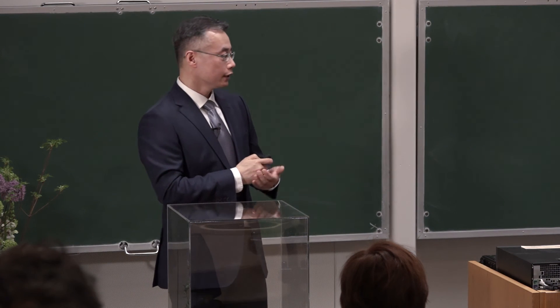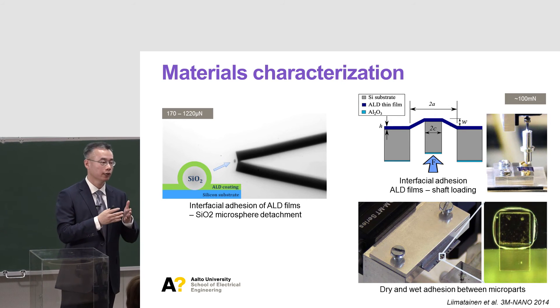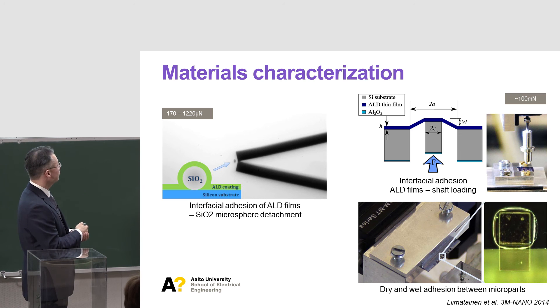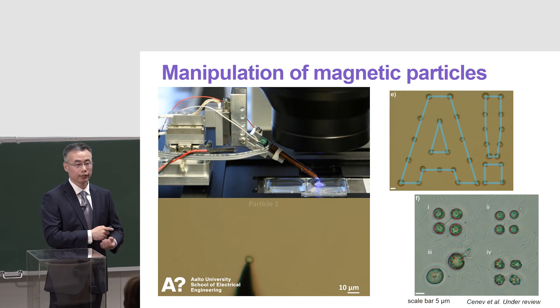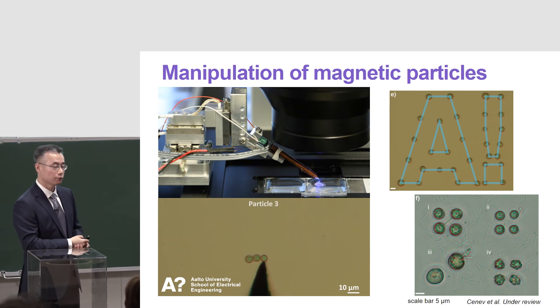Besides this, I'll briefly show some other examples of how we can help physics. We can use miniature robotics together with very high-sensitive force sensors to measure nanonewton level force. For example, we can detect the coating strength of atomic layer deposition, which is nanolayer deposition on the surface or as a membrane, and measure the dry and wet adhesion between microparts. We can move very small particles, such as magnetic particles which are a few micrometers in size. We can selectively pick them and place them very accurately. They are also useful for pharmaceutical applications.